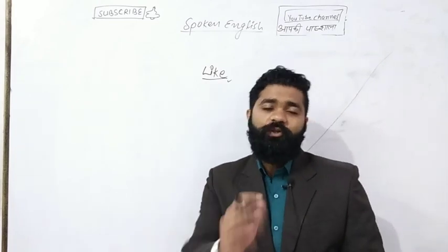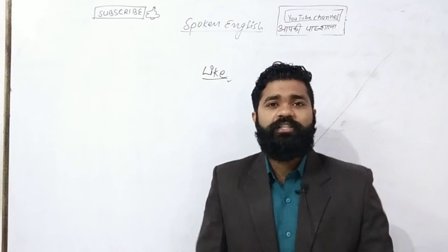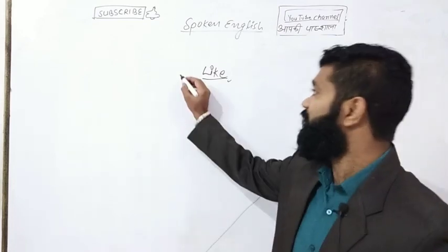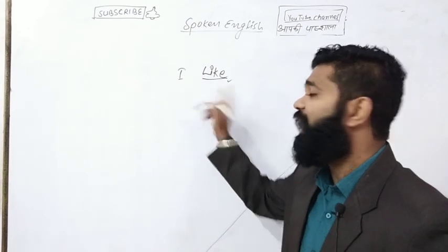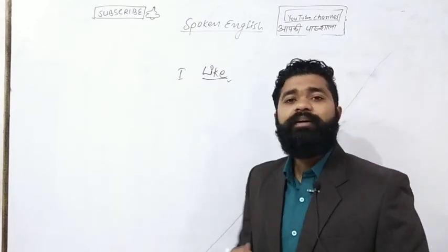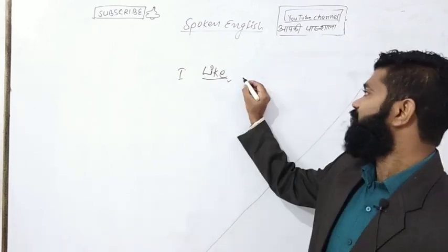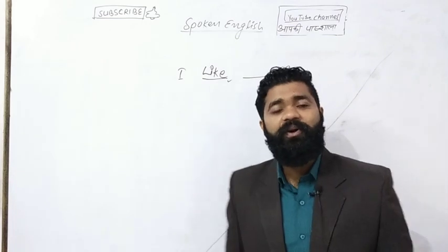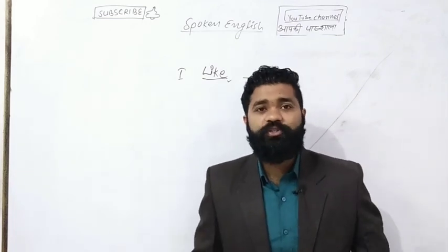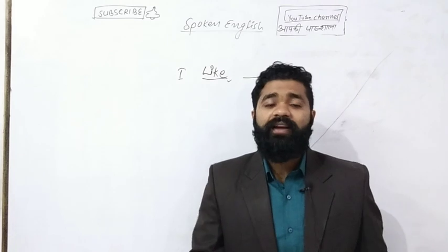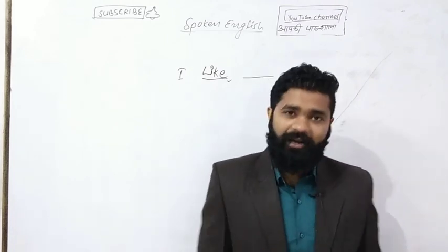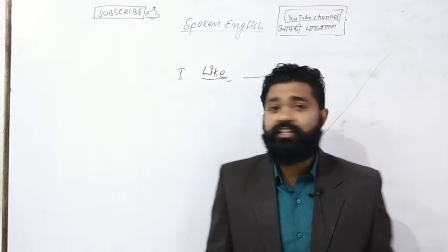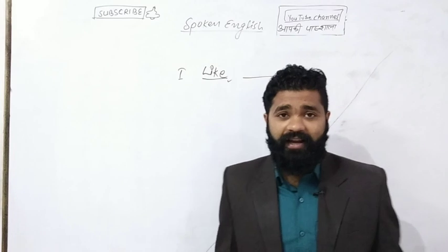जब भी आपको कोई चीज अच्छी लगती है, तो आप किसी को भी बताते हो. अगर मैं मेरी बात कर रहा हूँ, तो मैं कहूंगा 'I like' — मुझे पसंद है. जो चीज मुझे पसंद है उसके बारे में आगे कह देना है. जैसे कि मुझे आप पसंद हो — I like you. मुझे English अच्छी लगती है — I like English.